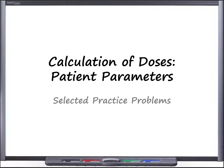Welcome to this podcast on the calculation of doses using different patient parameters. For many drugs, doses are actually determined on the basis of specific patient parameters. These can include age, body weight, and body surface area. In this podcast, we will be practicing calculating drug doses taking these factors into consideration, specifically doses based off of body weight and body surface area. So with that, let's get started.